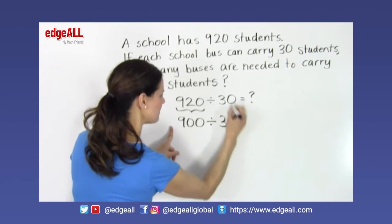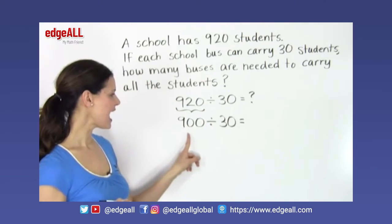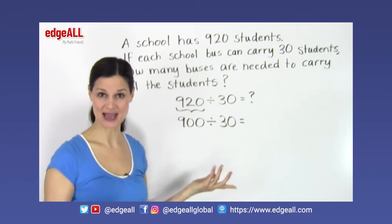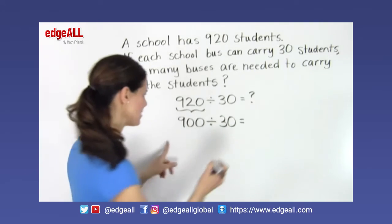So we round down to 900 and we still divide by 30. It's a nice multiple of 10 there. And now I have a very simple division problem. 900 divided by 30 equals 30.